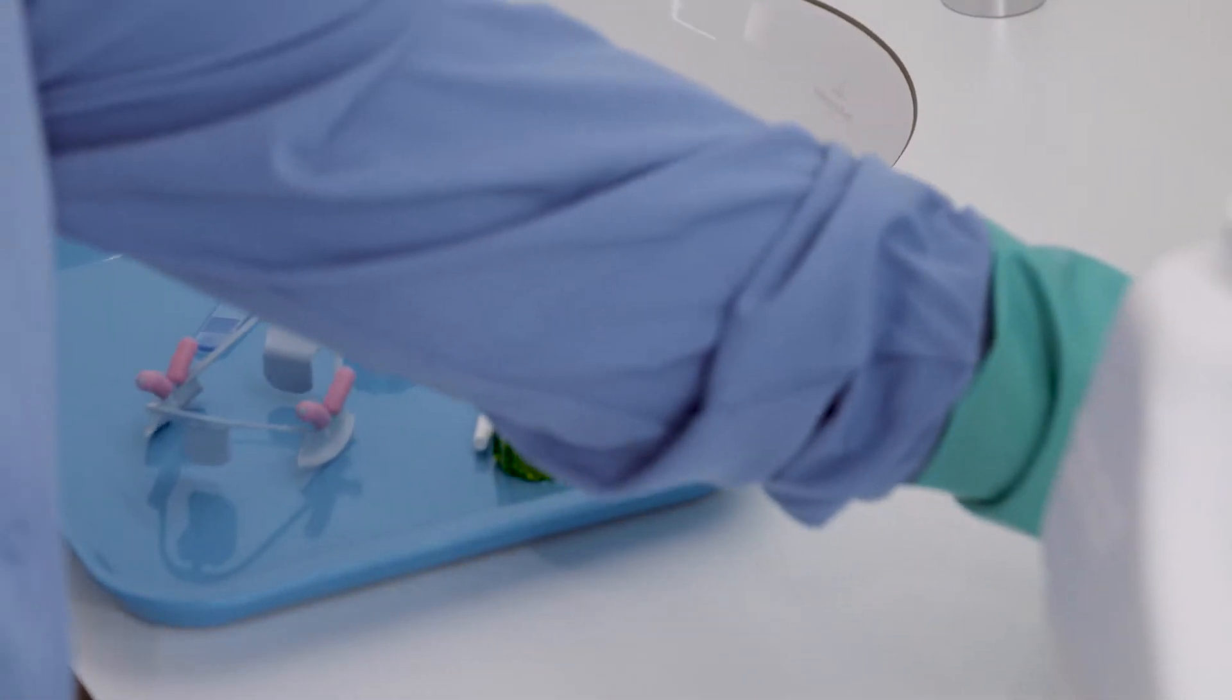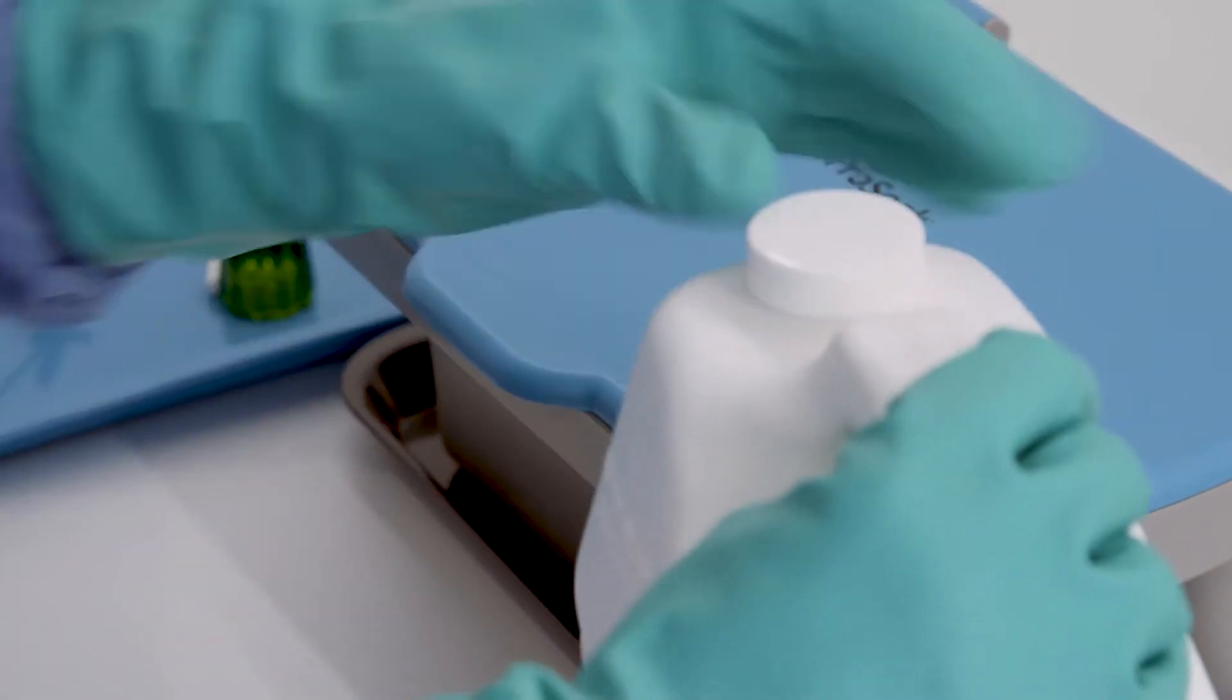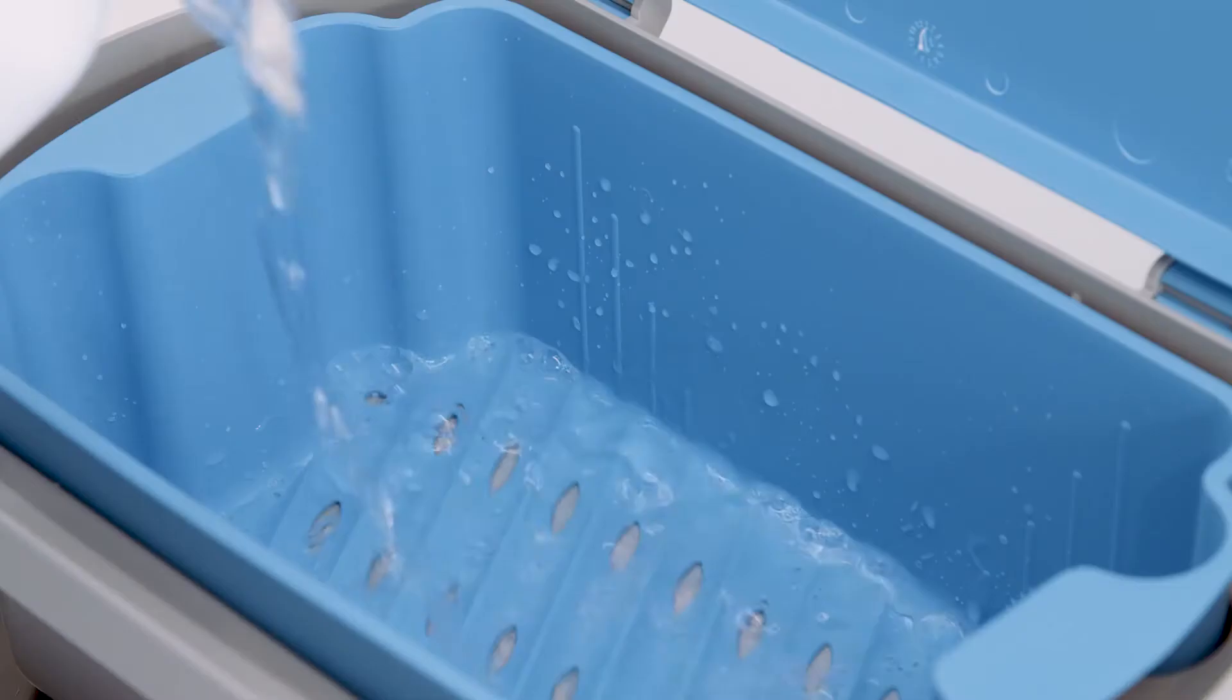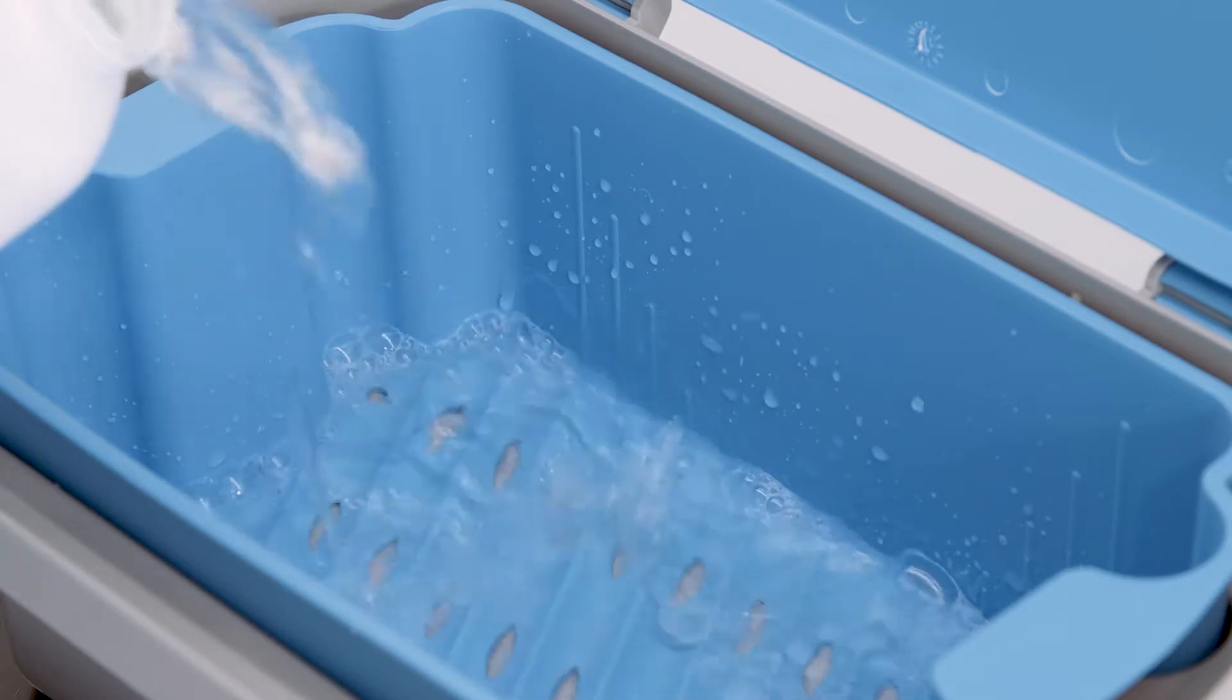Thoroughly clean and dry the device per the manufacturer's instructions. Pour Sporox 2 solution into ProSoak soaking tray or appropriate container. Do not dilute the solution with water.